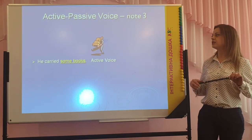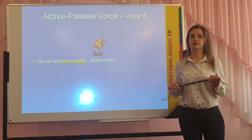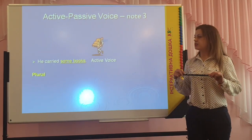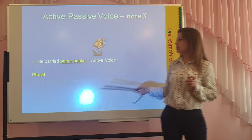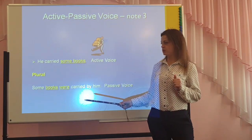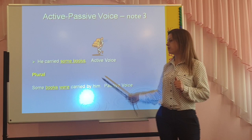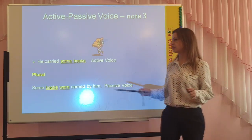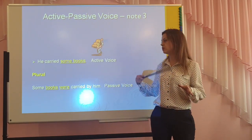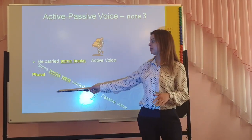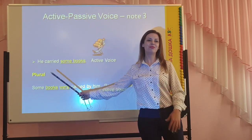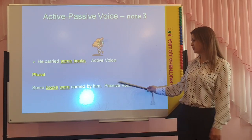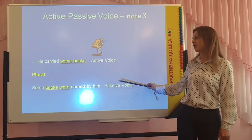He carried some books — active voice. When we talk about a plural noun in the active form, in the passive form we transform the sentence and use the helping verb 'were' because we are talking about plural things. We have: some books were carried by him. You can see the passive form.